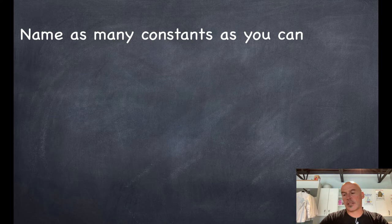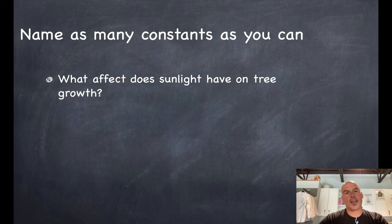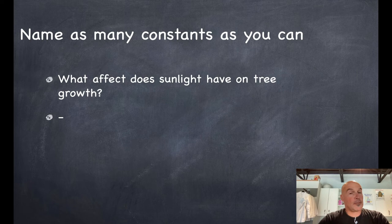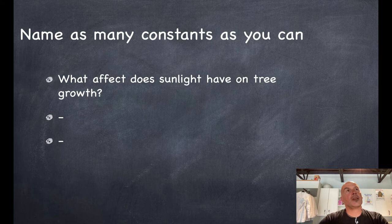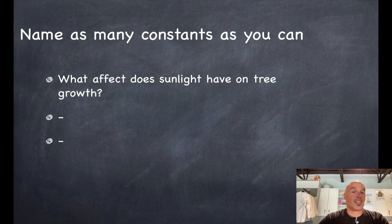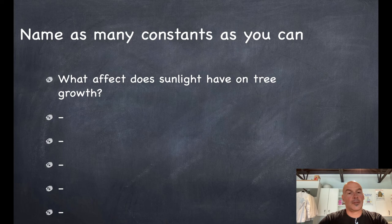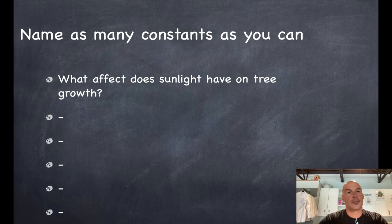All right, so let's try a little practice with constants. Name as many constants as you can for this observation. So what effect does sunlight have on tree growth? Maybe a constant could be the type of tree, right? Because it's got to stay the same throughout the experiment. Maybe it could be the altitude. Maybe it could be time of day. So try and figure out as many constants as you can for this observation.